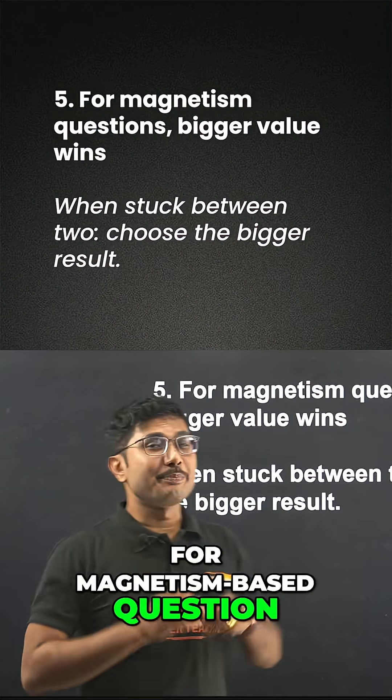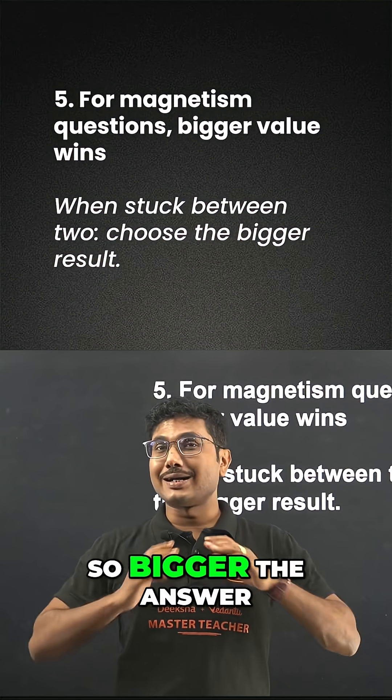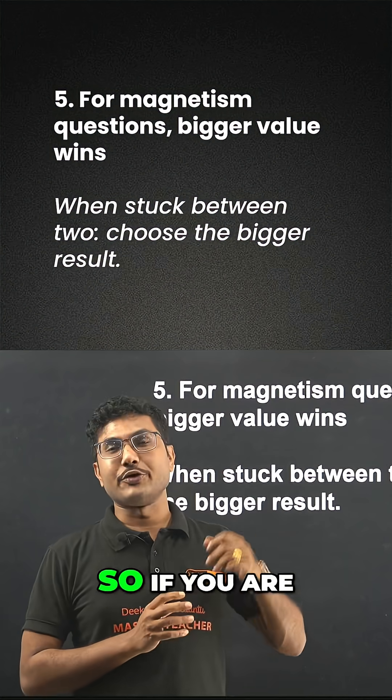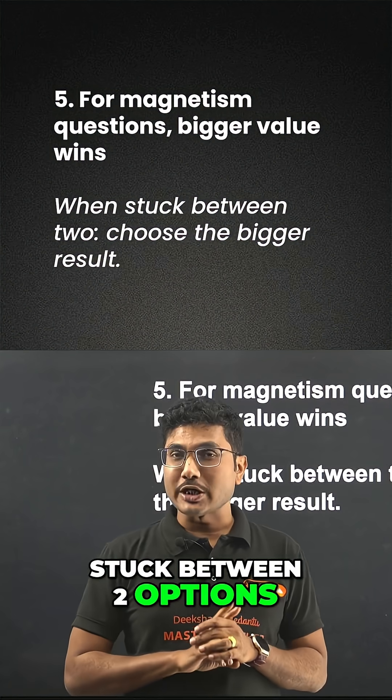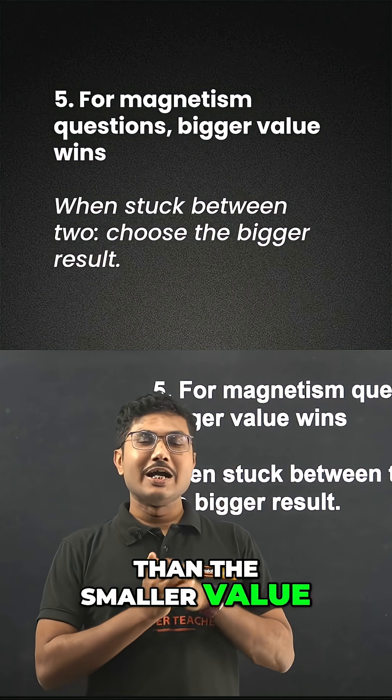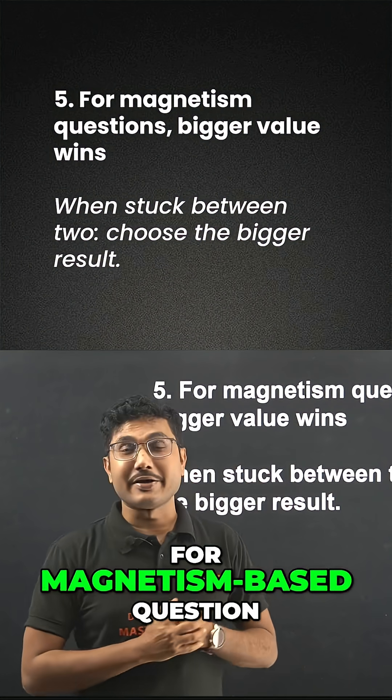For magnetism-based questions, bigger value always wins. So bigger the answer, most chance it will be correct. If you are stuck between two options and you have to choose, choose the bigger value than the smaller value. This is specifically applied for magnetism-based questions.